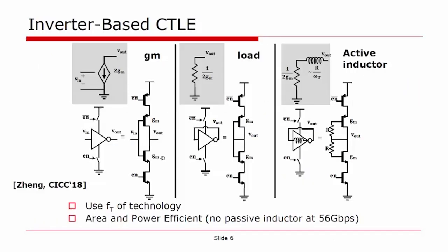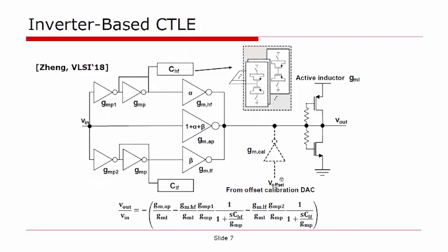An inverter-based CMOS circuit using switchable inverters, as shown in the left figure, is used as a major building block for the receiver front-end. The inverter can be connected to form a GM cell. If the input and output are connected, the inverter forms a 1-over-GM load. If extra resistors are used, this structure can form an active inductor. Using inverters as building blocks allows us to take advantage of the FT of the technology. It is also area- and power-efficient. For example, the entire receiver front-end at 56 Gbps has no passive inductor.